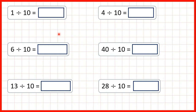For these questions, we're dividing by 10, but apart from 40, the numbers we're dividing — our dividends — are not numbers that are in the 10 times table. So that means we're going to get decimals with tenths as our answers.